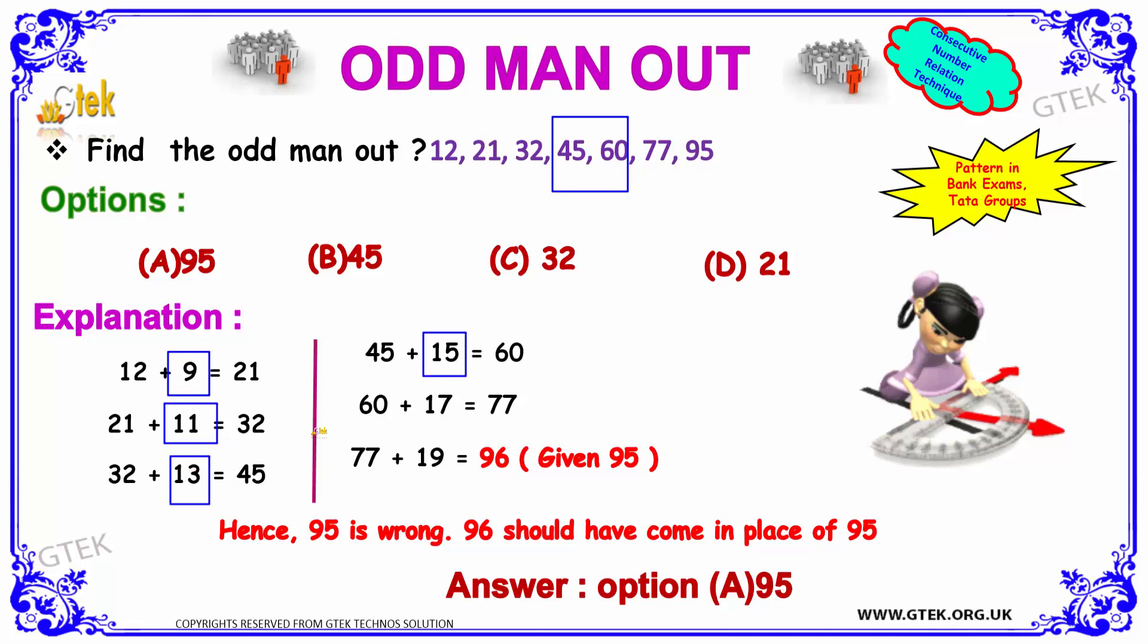So if it is 19, you got 77 plus 19 is equal to 96, but here it is 95. So option is A, that's the odd man.